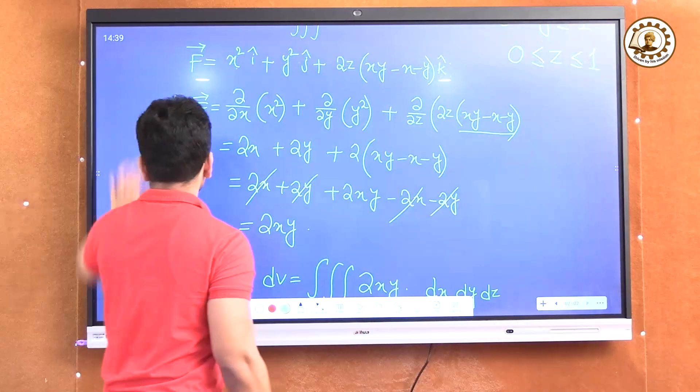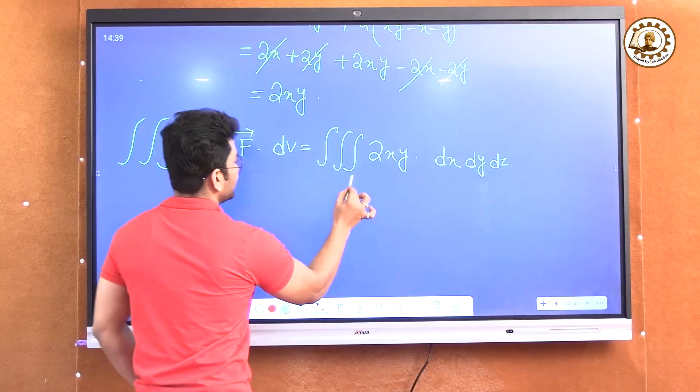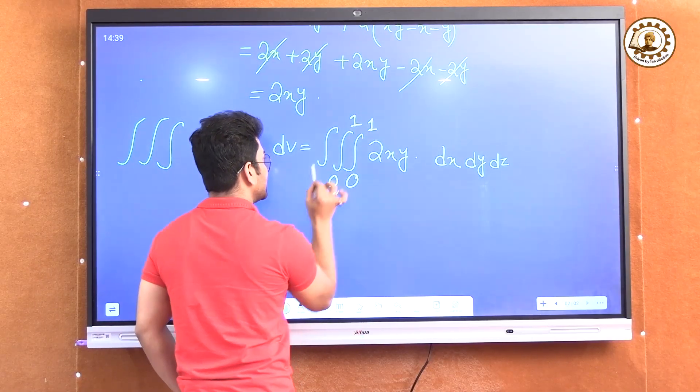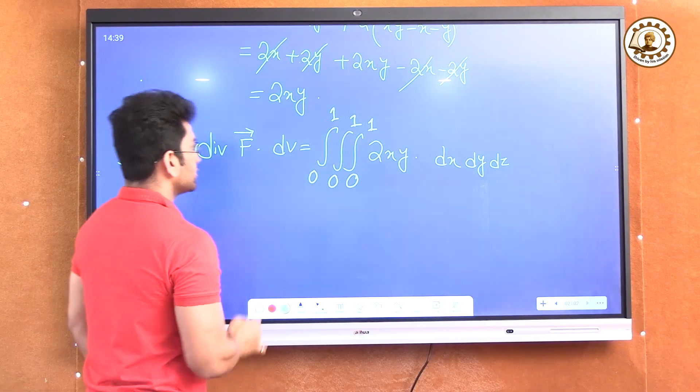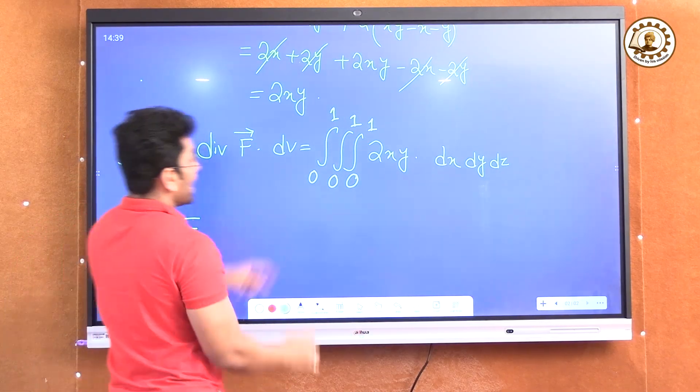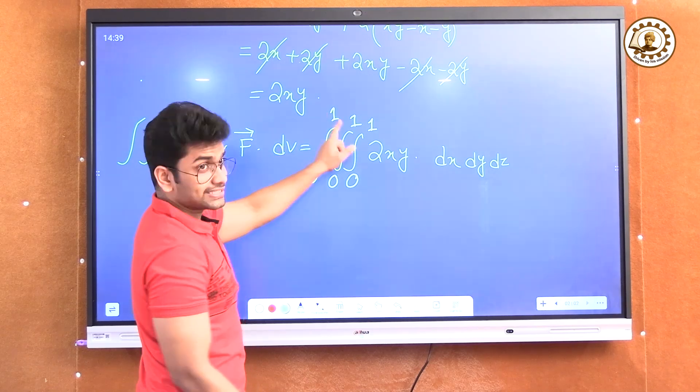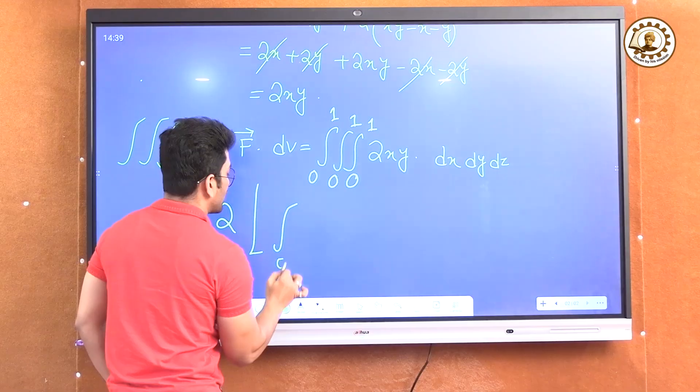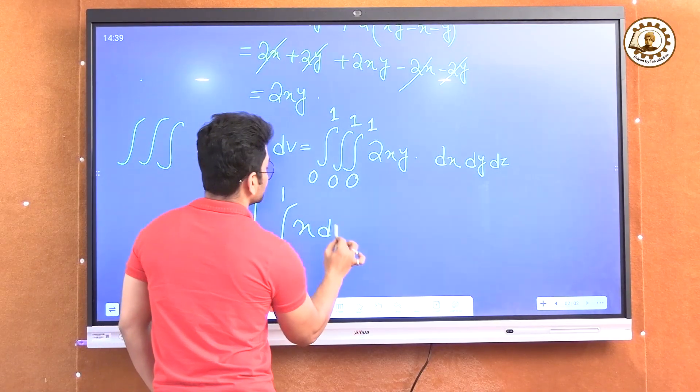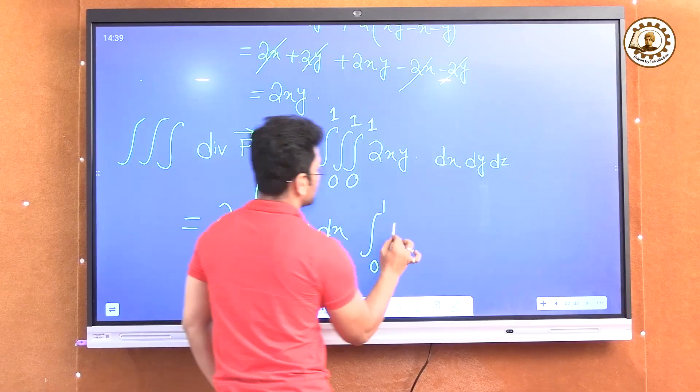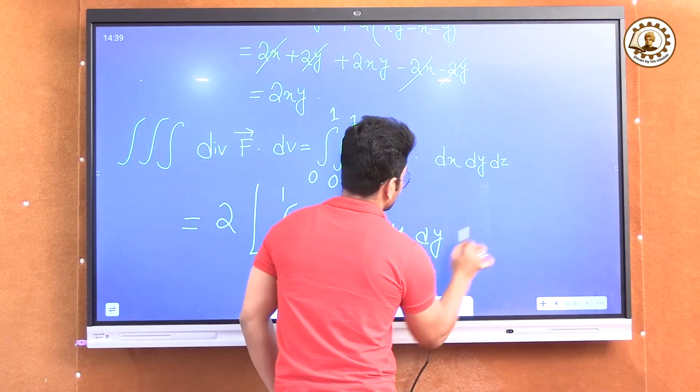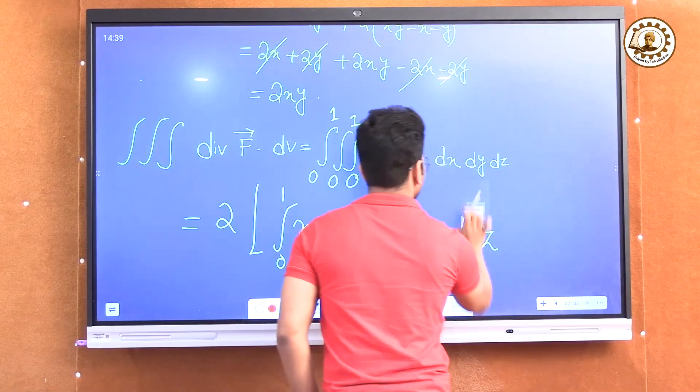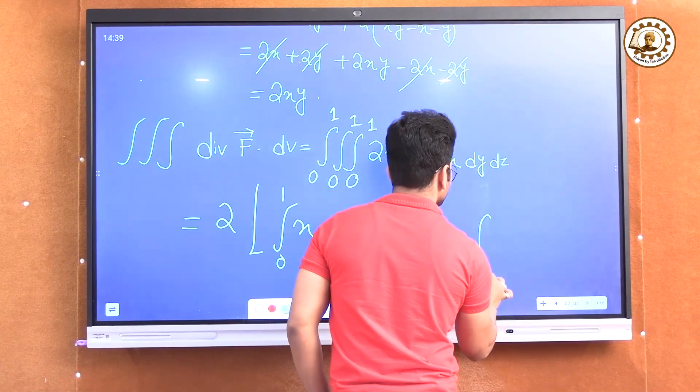That means here it will be 0 to 1, 0 to 1, 0 to 1. As the limits are constant, I can separate out the parts. That means 0 to 1 x dx into 0 to 1 y dy into 0 to 1 dz. There is no z.